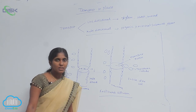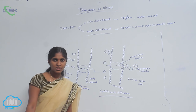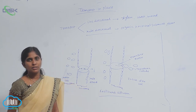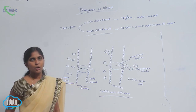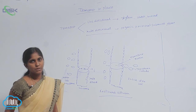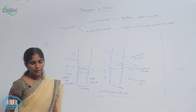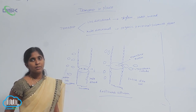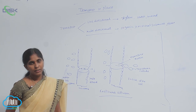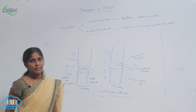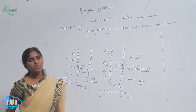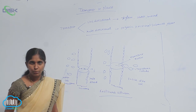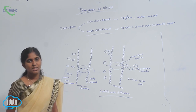Porins are proteins which are present on the outer membrane of plastids, mitochondria, and the cell wall of bacteria. They allow the diffusion of small-sized proteins to the inside of the cell.